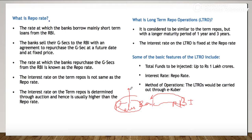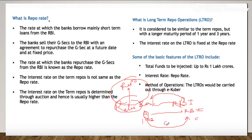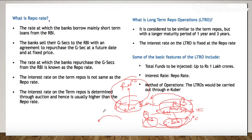But how does this work? Let's say Bank A wants to take a loan from RBI. If the loan amount is 100 rupees, then Bank A will sell 100 rupees worth of government securities to RBI. But after a fixed term, Bank A will repurchase those government securities — not at the same rate, but at a higher price, let's say 110 rupees. So the interest rate becomes 10%, and this is nothing but the repo rate.